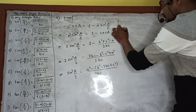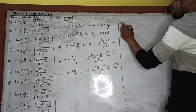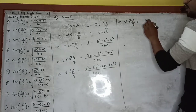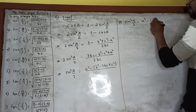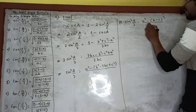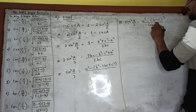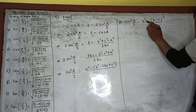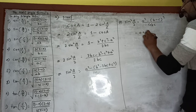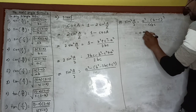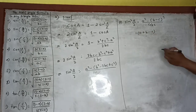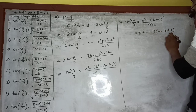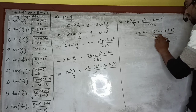So sin²(A/2) is equal to [A² − (B² − 2BC + C²)] / (4BC), which simplifies to [A² − (B − C)²] / (4BC). Opening the difference of squares formula, this becomes (A + B − C)(A − B + C) / (4BC).